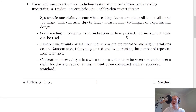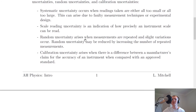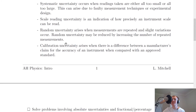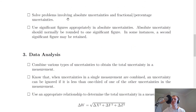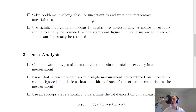Scale reading uncertainty is an indication of how precisely an instrument scale can be read. Random uncertainty arises when measurements are repeated and slight variations occur, and may be reduced by increasing the number of repeated measurements. Lastly, calibration uncertainty arises when there is a difference between a manufacturer's claim for the accuracy of an instrument when compared with an approved standard. You need to be able to solve problems involving absolute uncertainties and fractional or percentage uncertainties. Percentage uncertainties are very useful, as are absolute uncertainties, so you need to be able to state uncertainties in absolute, fractional, and percentage form.